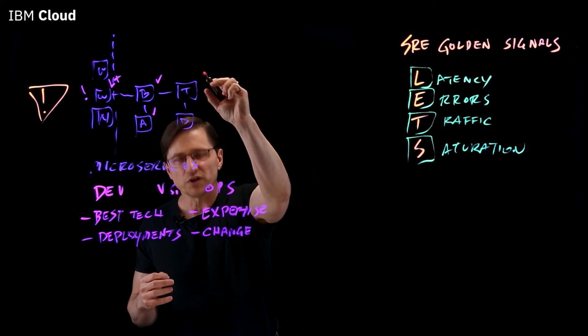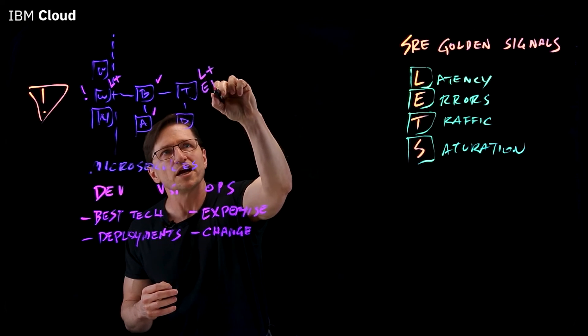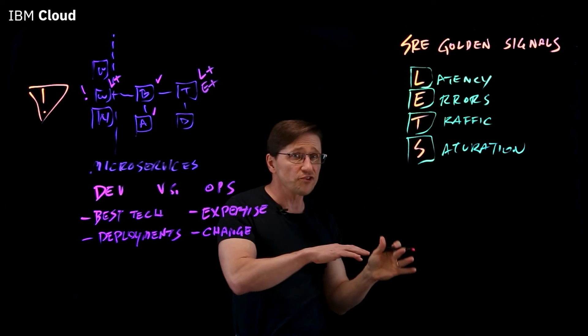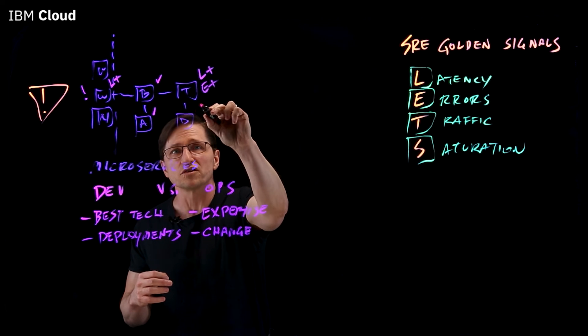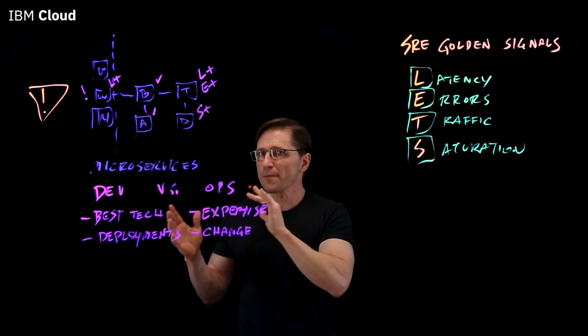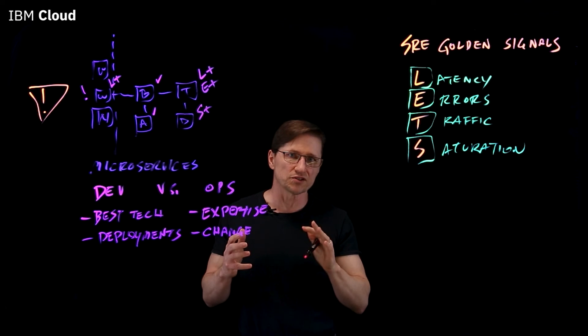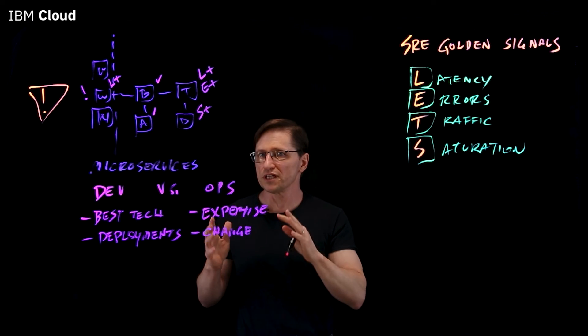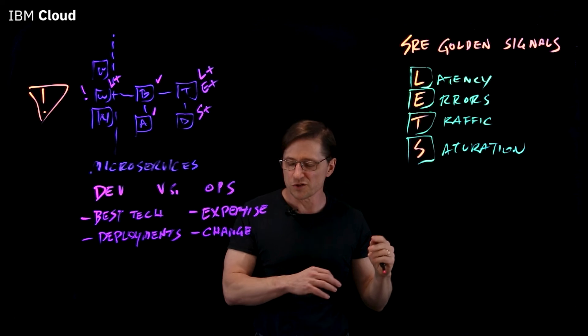However, the transaction service is reporting latency and error problems, and going a little bit further down the line, you see the data service is reporting that it's oversaturated. So, by monitoring these four different signals, you're able to isolate the potential cause and get to the root cause more quickly.